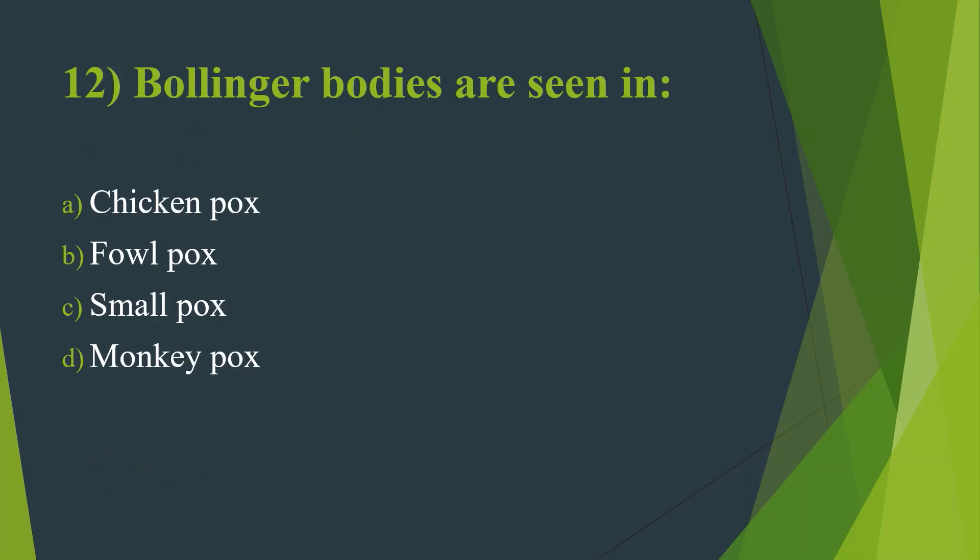Twelfth question: Bollinger bodies are seen in — Option A, Chickenpox. Option B, Fowlpox. Option C, Smallpox. Option D, Monkeypox. Answer is Option B, Fowlpox.